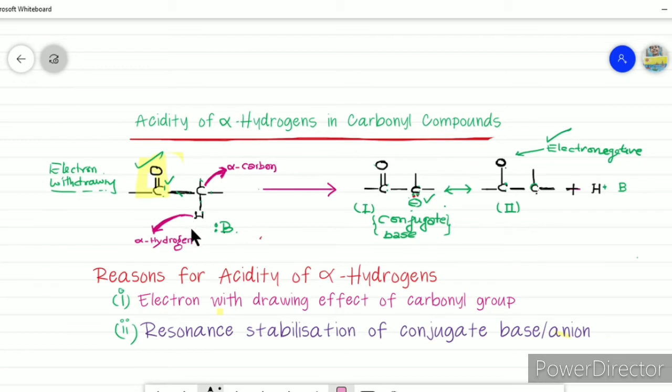So what causes this acidity? The first reason is that the carbonyl group is electron withdrawing. This group withdraws electron density from the alpha carbon, making the alpha carbon electron deficient. This is why the hydrogen atom can depart as H-positive.